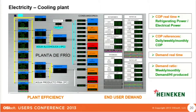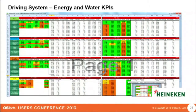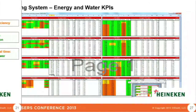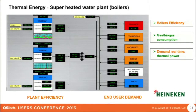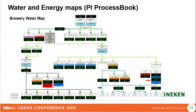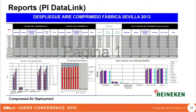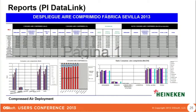COP is the performance indicator in a cooling plant. This is an overview of all our energy and water KPIs in the brewery. You can check boiler efficiency, gas and biogas consumption and demand. This is a map where in one look we can identify any difference between inlets and outlets, and we calculate monthly data in a comprehensive deployment view.